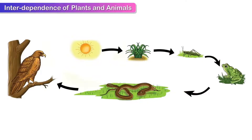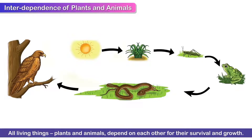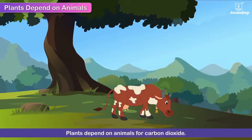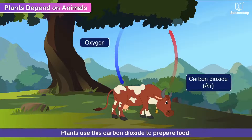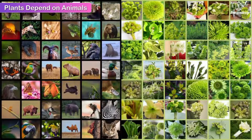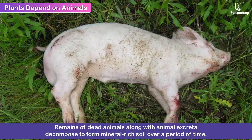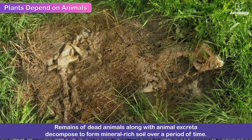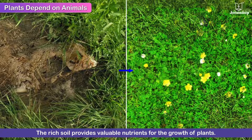Interdependence of plants and animals. All living things — plants and animals — depend on each other for their survival and growth. Plants depend on animals for carbon dioxide: animals breathe in oxygen and breathe out carbon dioxide, which plants use to prepare food. Plants also depend on animals for dispersal of seeds, which helps more plants grow over a large area. The remains of dead animals and animal excreta such as cow dung decompose to form mineral-rich soil, providing valuable nutrients for the growth of plants.